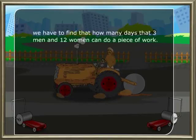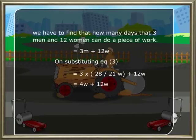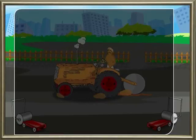We need to find how many days three men and twelve women take. Substituting equation three into (3M + 12W): 3 × (28/21)W + 12W = 4W + 12W = 16W. Therefore three men and twelve women is equivalent to sixteen women.